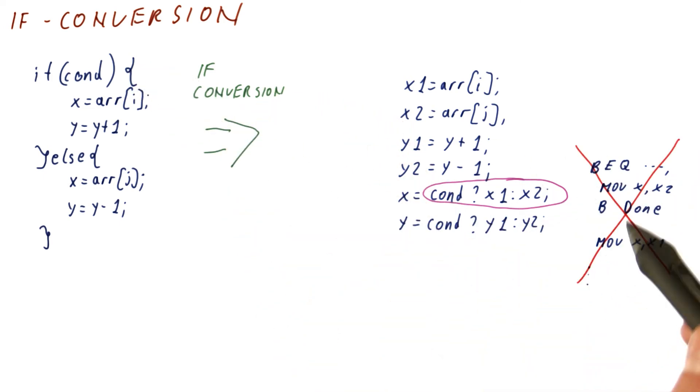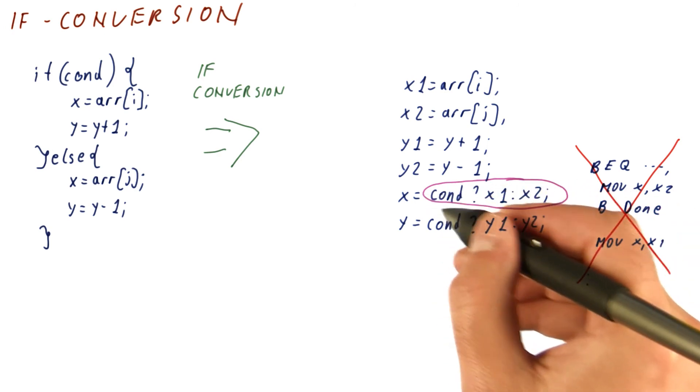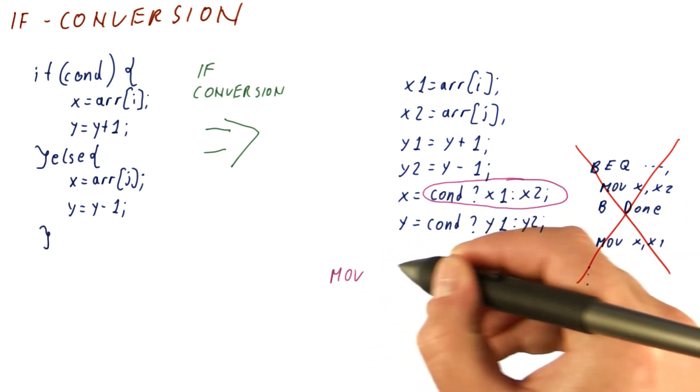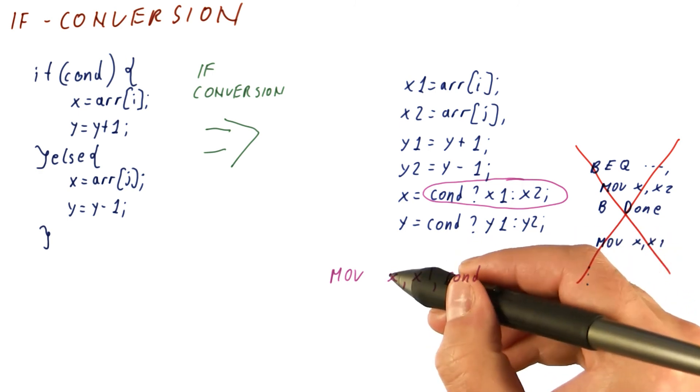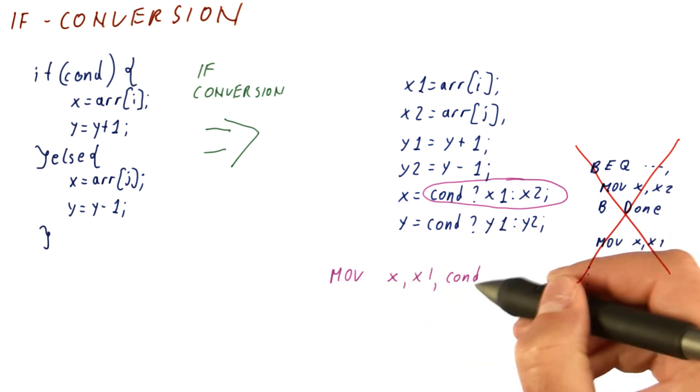So if this is all you can do, then you don't do if conversion. What we need for if conversion to work is some sort of a move instruction that will do something like move x1 into x if a flag is true.